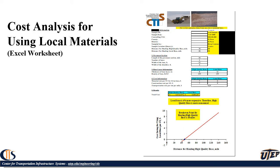The last item is a cost analysis. There is a critical hauling distance. We put together a worksheet to compare two designs for an equivalent number of traffic loads — one with high-quality material and one with local material — considering material cost, transportation cost, and the break-even point. In this example, at around 50 miles the cost difference becomes zero. If it's less than 50 miles, you're better off bringing the high-quality material than using local materials, because the local base is significantly worse than the high-quality base.